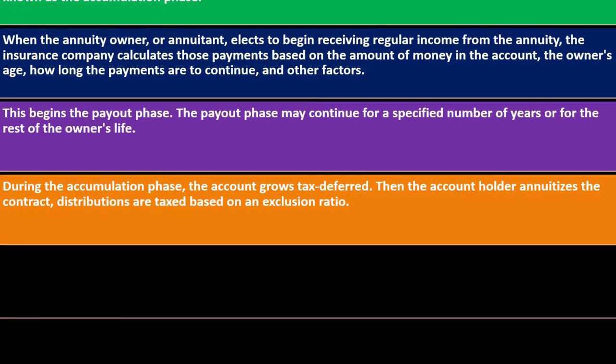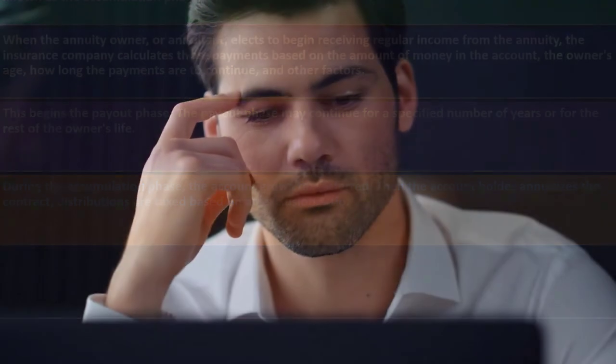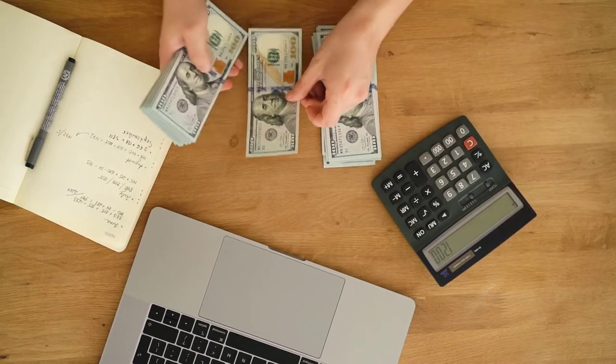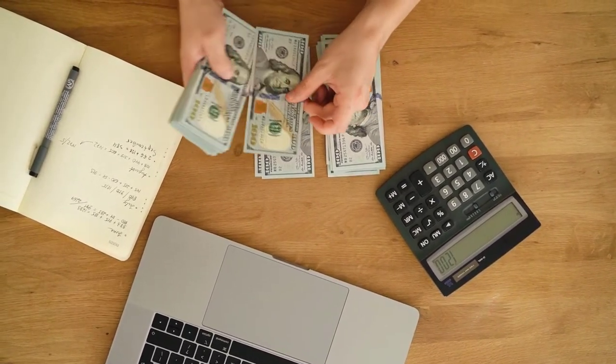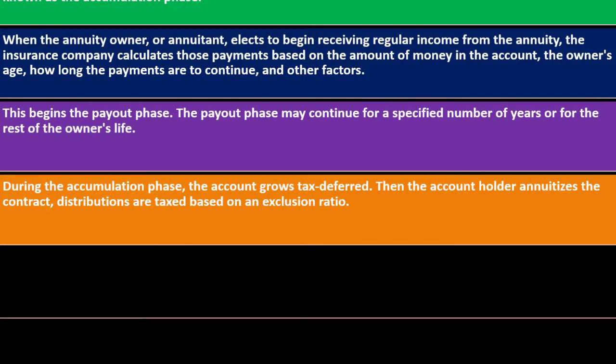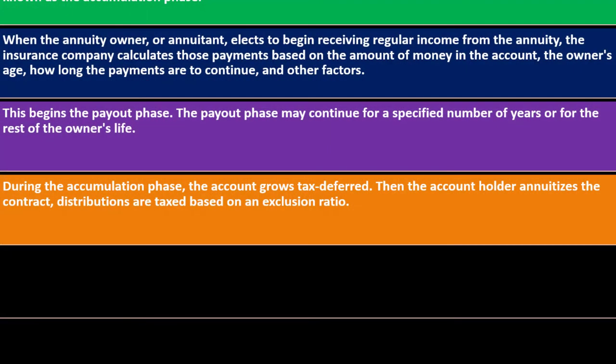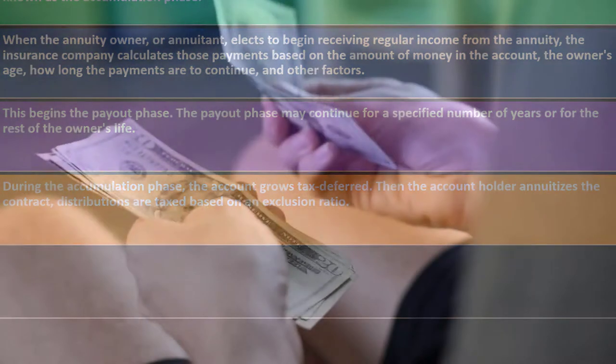During the accumulation phase the account grows tax deferred. Then the account holder annuitizes the contract and distributions are taxed based on an exclusion ratio. When you put a lump sum into the annuity, that's not a taxable event — it's principal going into an investment. The fixed rate of return grows inside the annuity without annual 1099s, because it's tax deferred. But when you start taking money out, there can be a tax consequence.